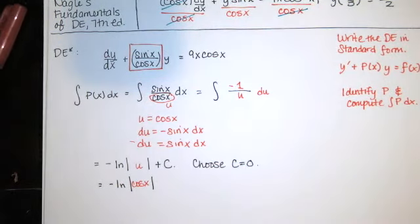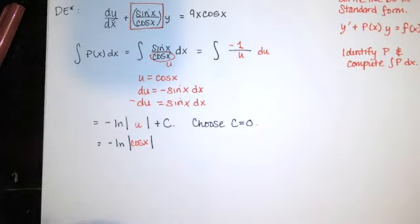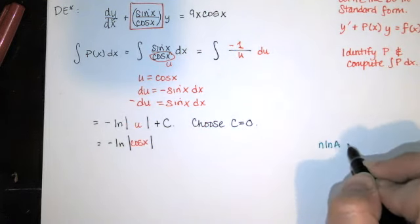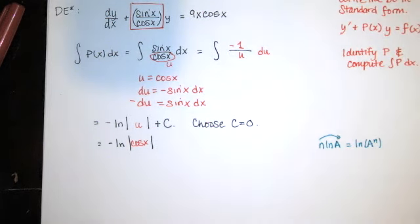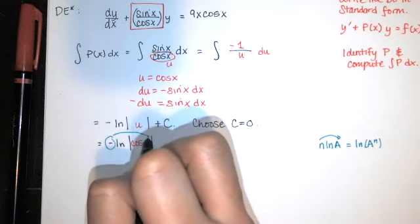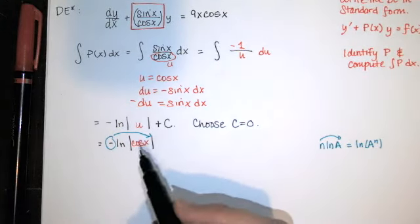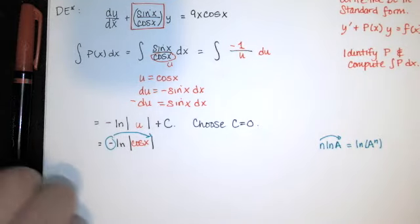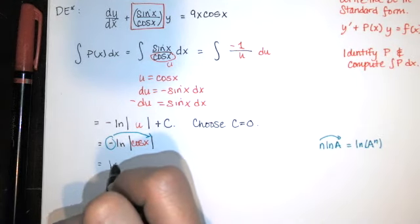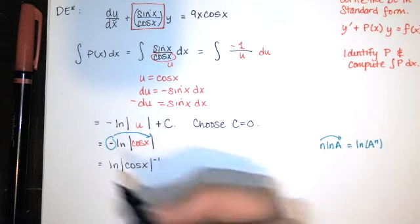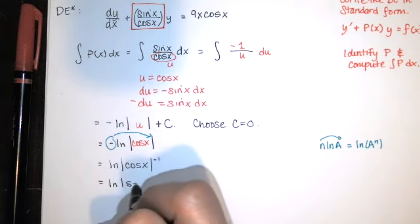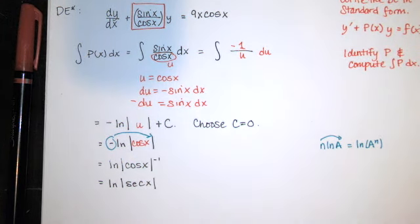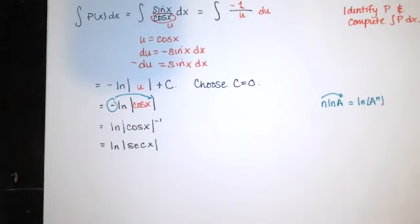The antiderivative is −ln|u| = −ln|cos(x)| (with c = 0, since we only need one integrating factor). Using the logarithm power rule, we bring the −1 inside to get ln|cos(x)|^(−1) = ln|1/cos(x)| = ln|sec(x)|. The integrating factor is e raised to that power.